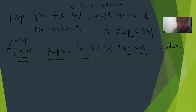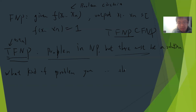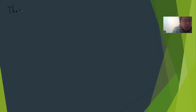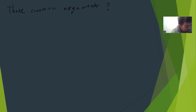The problem is: what kind of problem guarantees there is a solution? This is the same as in mathematics — usually you cannot get a solution explicitly, but you can construct a solution. What is this sort of thing? There are three common arguments.